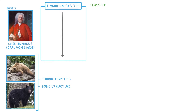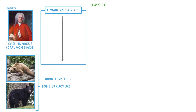We call this the Linnaean system, and it groups species into kingdoms, such as plant or animal, then phylum, class, order, family, genus, and finally species. To make this system usable by all different countries, and because it was designed hundreds of years ago, the names are mostly in Latin.